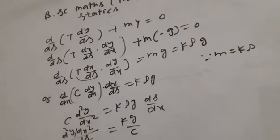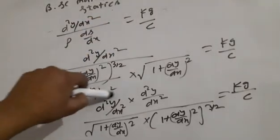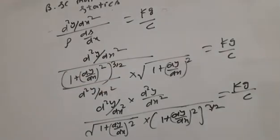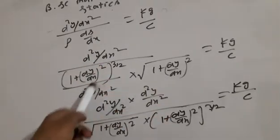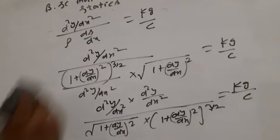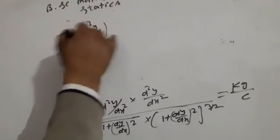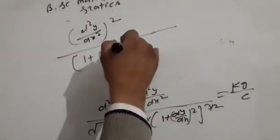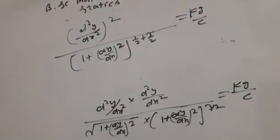This term is going to be 3/2 power and this term 1/2 power. When we add these, everything becomes d²y/dx² divided by (1 + (dy/dx)²) to the power 3/2, which simplifies to 2 by 2.